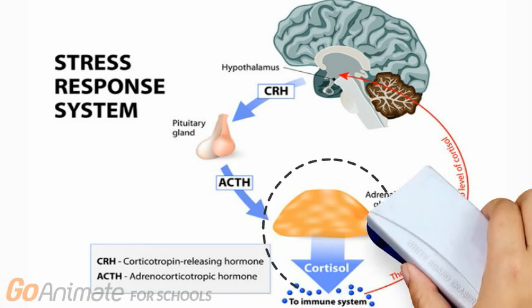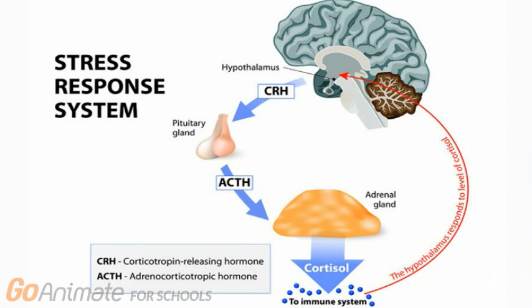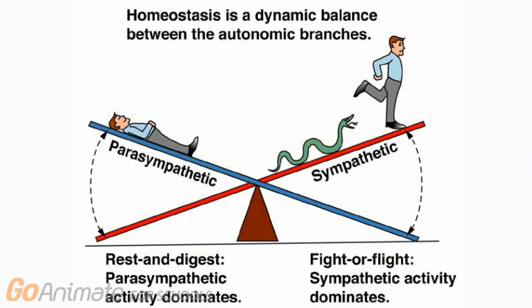When the threat passes, cortisol levels fall. At this time, another system in our body, called the parasympathetic nervous system, acts like a car brake that calms the body down after the danger has passed and reduces the stress response. Unlike the sympathetic system, the parasympathetic system helps your body produce a balance. We often refer to this role as the rest and digest system.